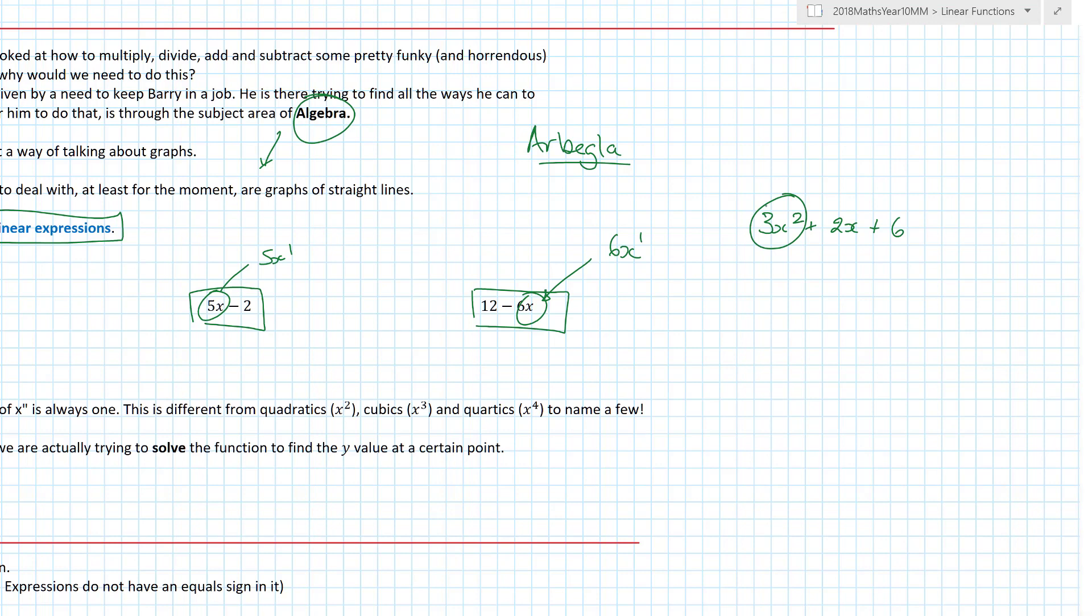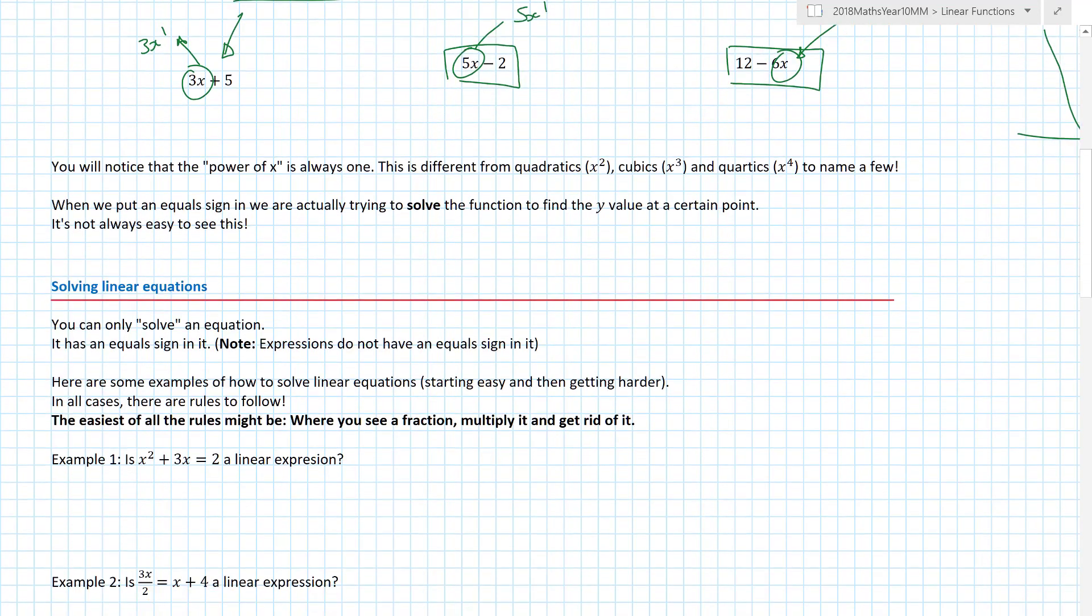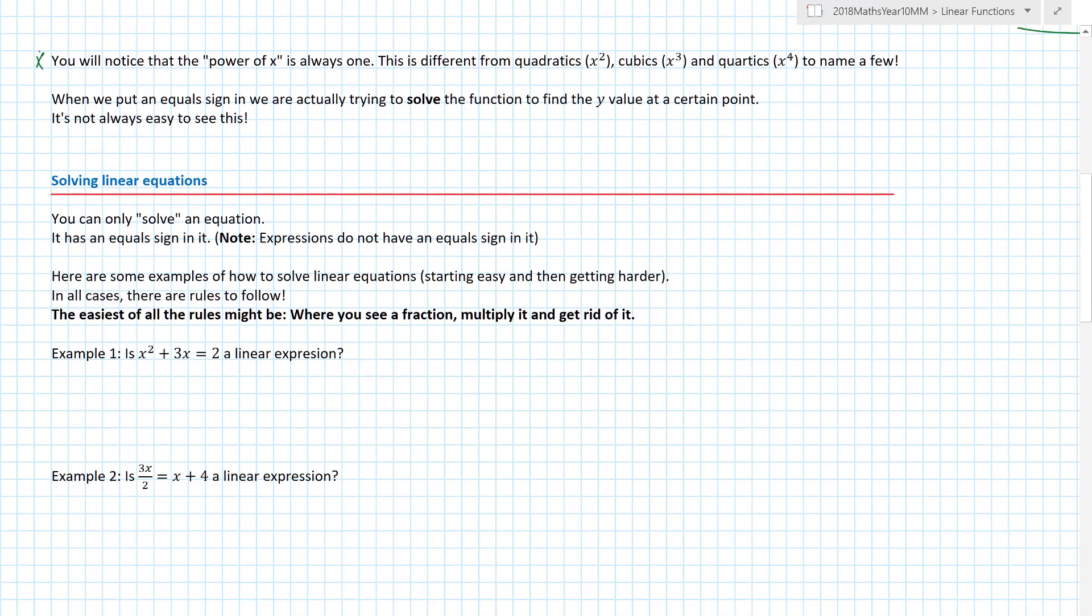If we have 3x squared plus 2x plus 6, the highest floaty number or highest power of x is actually 2. In that situation, the graph isn't linear. It's something called a quadratic. Remember that word. You're going to use it a lot in year 11. They can go on to infinity and beyond.